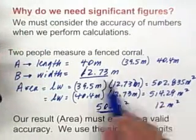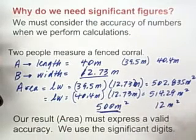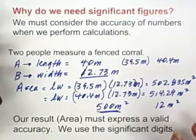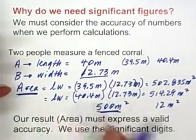So we don't actually know what the dimension of this corral is. So the reason that we use significant figures is to make sure that our answer, our calculation, reflects a valid accuracy.